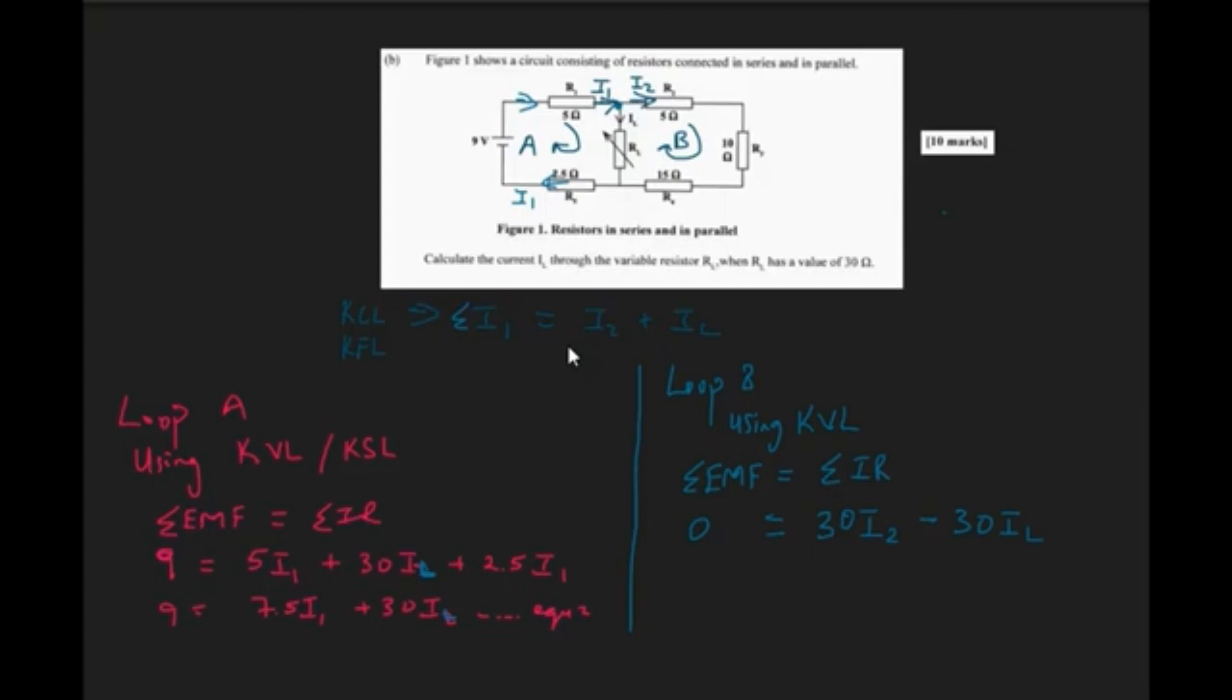So here is what loop B looks like. In loop B, I would have chosen that my current is flowing clockwise. Therefore, I2 would be flowing through R2, R3 and R4 respectively.